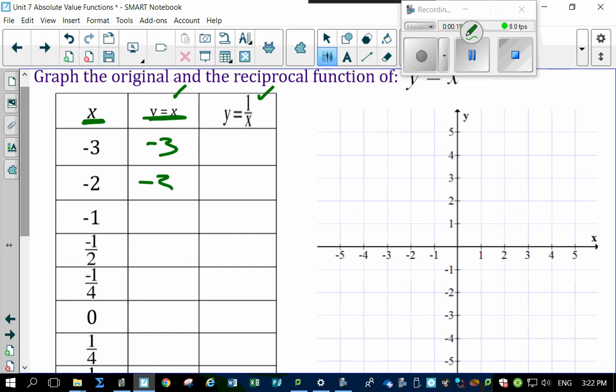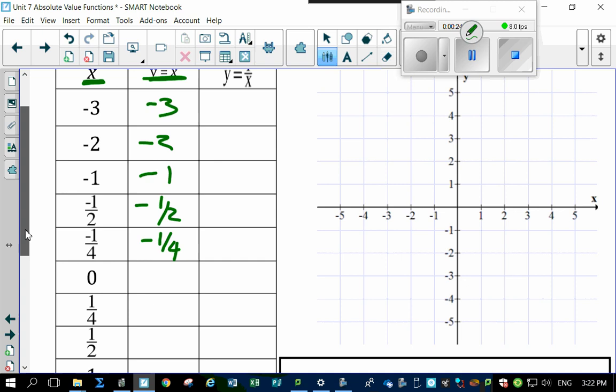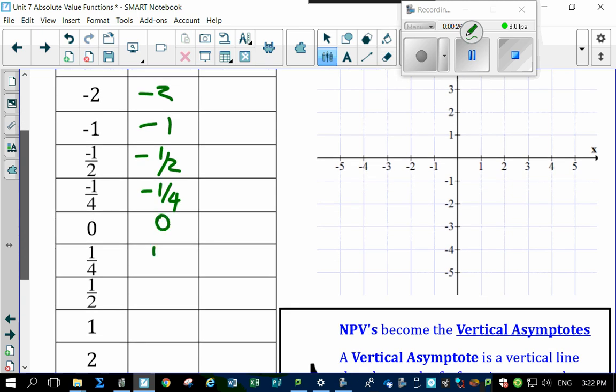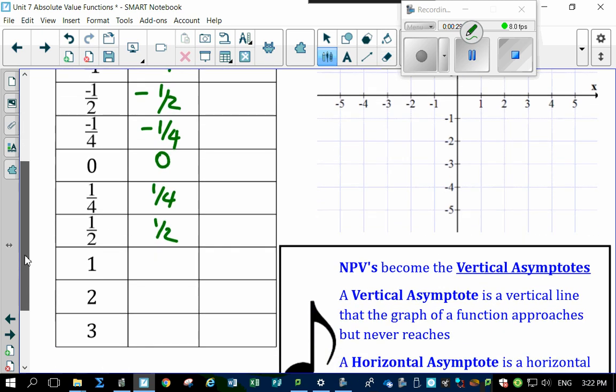That's minus 3, minus 2, minus 1, minus a half, minus a quarter. Look how we're going strong here. Zero, a quarter, a half. Oh my goodness, 1, 2, 3, way too easy.